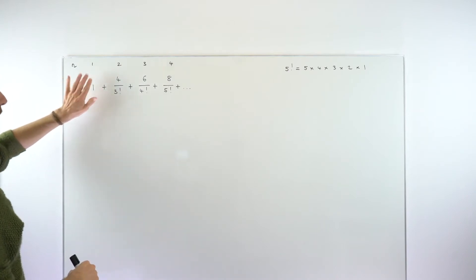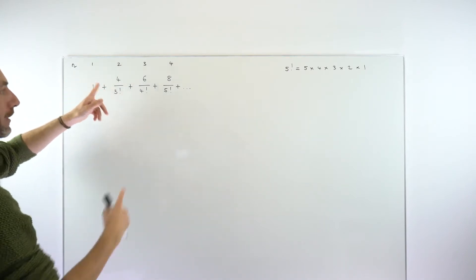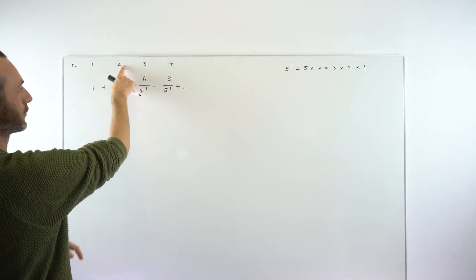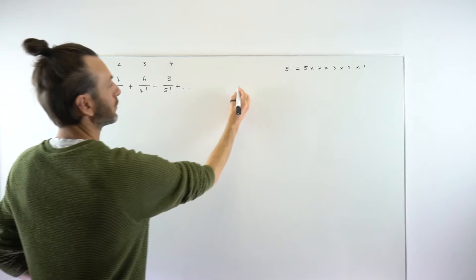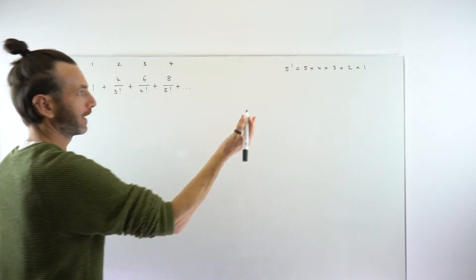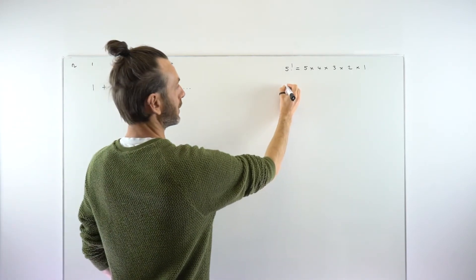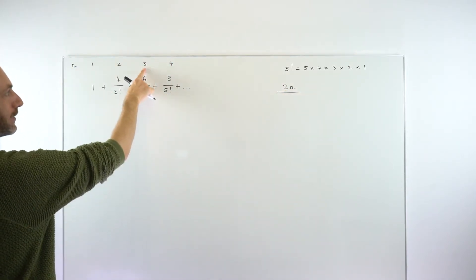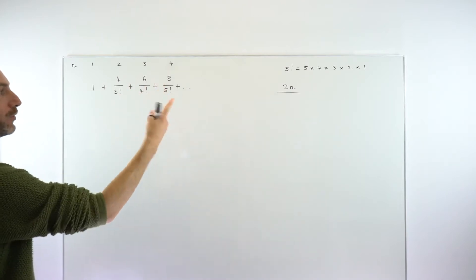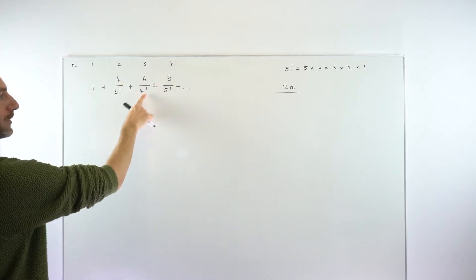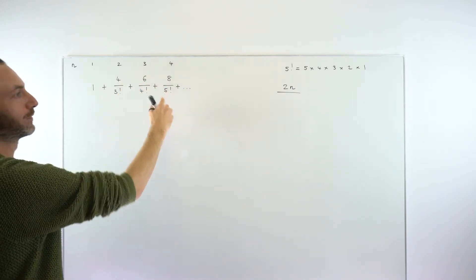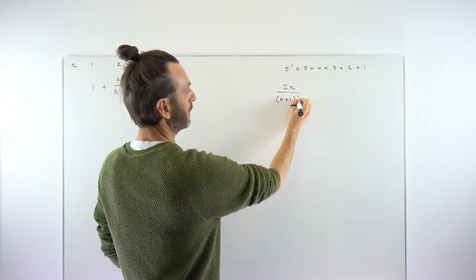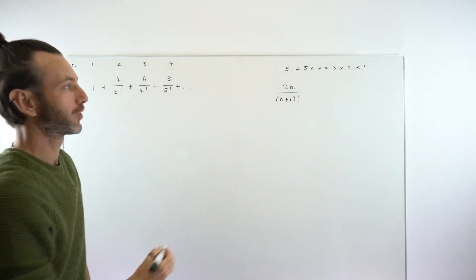The first term is not a great example, but it does fall into the pattern, as you'll see. If you pick out these ones, you can see that the numerator of the fraction is just 2 times the n number. So part of our term definition is going to be 2n on the numerator. The denominator is just this number plus 1 inside a factorial — so this is 3 plus 1 factorial, this is 4 plus 1 factorial. In general, that's going to be (n+1) factorial. So that's how we define each term.